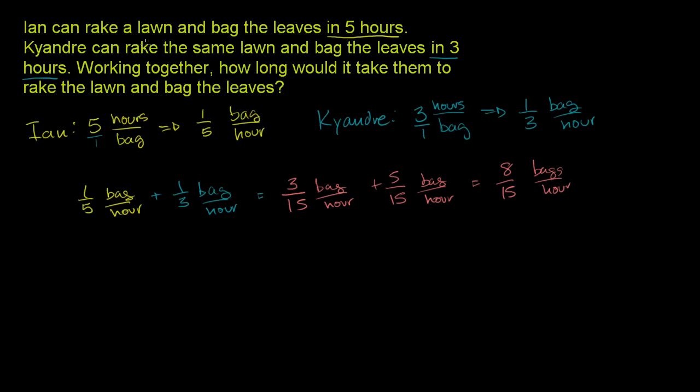And when I say bag, I mean all the stuff: rake, lawn, and bag. The whole task per hour. Eight-fifteenths of a task per hour. So working together, how long would it take them to rake the lawn and bag the leaves? Well, this is how many of the bagging they can do per hour. You can invert this. So if you invert that, you get this is equal to 15 over eight hours per bag.